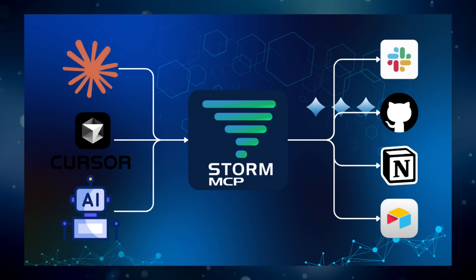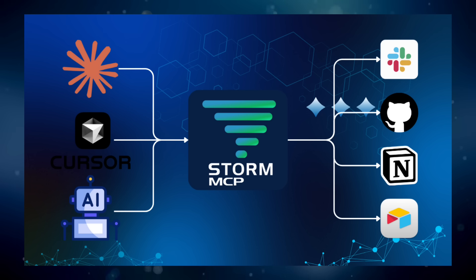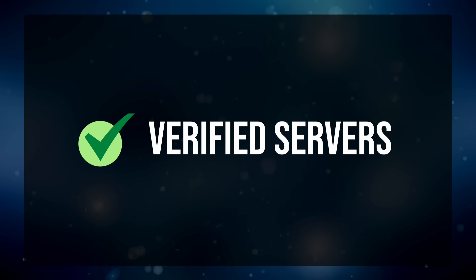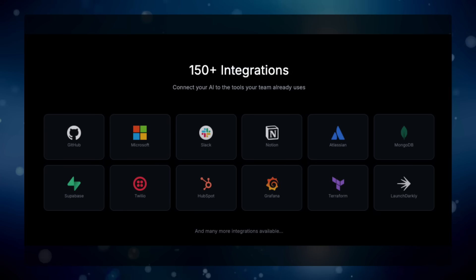Instead of connecting your AI to 50 different services individually, you connect it once to Storm MCP, and Storm MCP handles everything else. Here's what makes it powerful: first, verified servers — Storm has more than 100 pre-configured MCP servers, every single one security audited and performance tested.